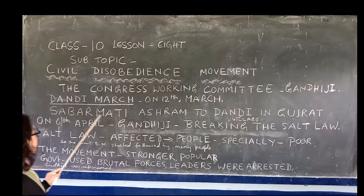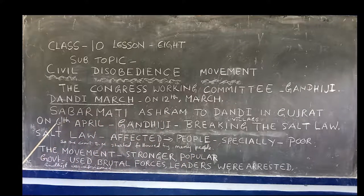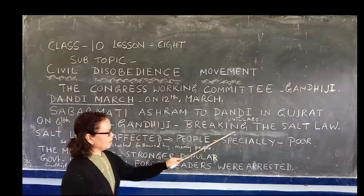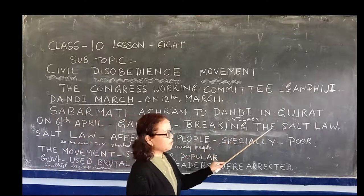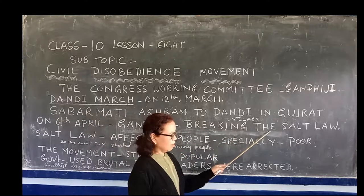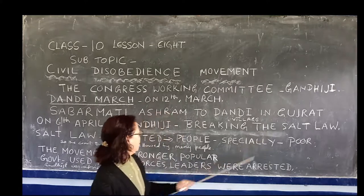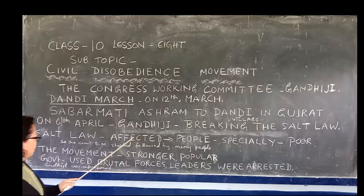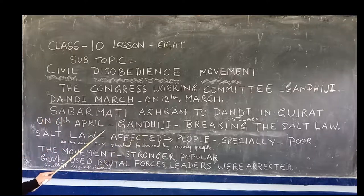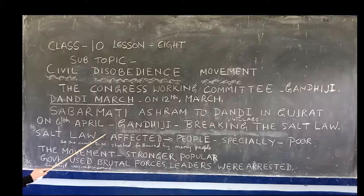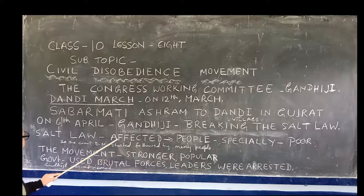Gandhiji started his march on 6th April, breaking the salt law. The salt law was passed by the British government. Whoever collected the salt had to pay heavy tax. So Gandhiji and the people marched towards Dandi to collect the salt by breaking the salt law passed by the British government.